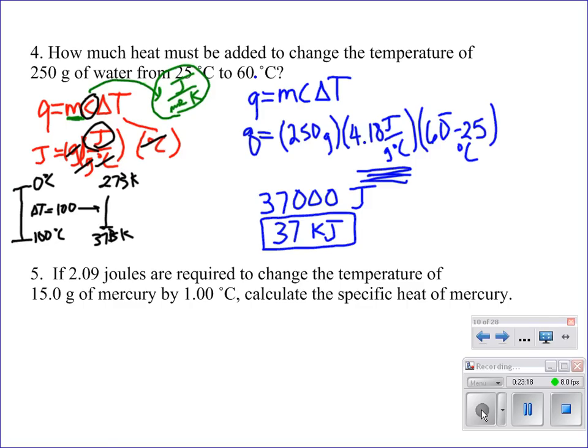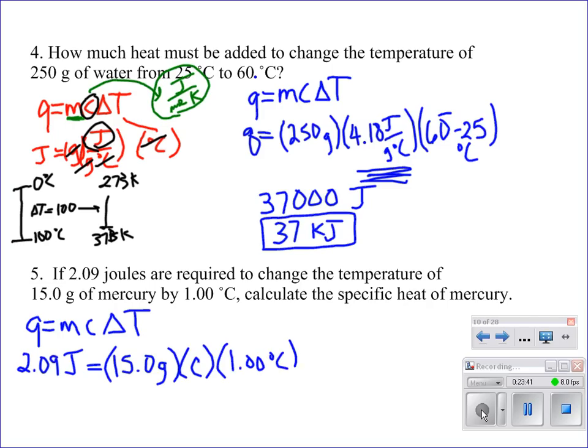If 2.09 joules are required to change the temperature of 15 grams of mercury by one degree, calculate the specific heat. Another Q equals mcΔT problem. The heat is 2.09 joules, 15 grams, we're looking for the specific heat. Delta T is 1. Solve for specific heat, and our units are joules per gram degree Celsius. Give me three sig figs. 0.139 joules per gram degree Celsius.